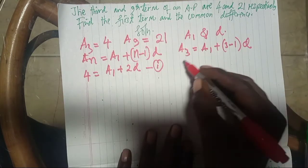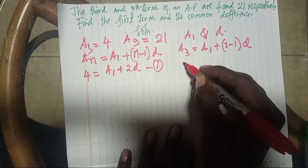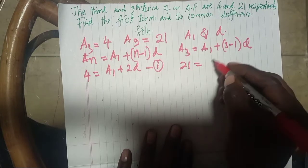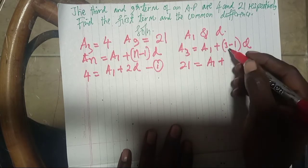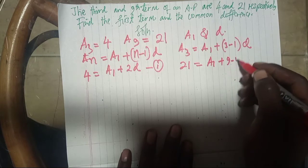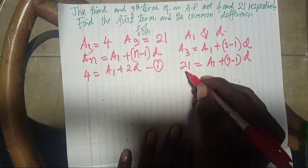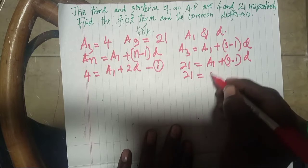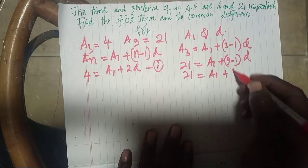And the second equation is that we are having A9. A9, that is 21, is equal to A1 plus N is 9 minus 1 times D. This is 21 equals A1 plus 8D.